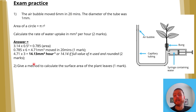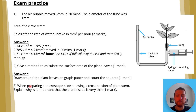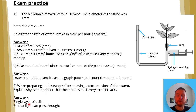Question two: give a method to calculate the surface area of plant leaves. The answer: draw around the plant leaves on graph paper and count the squares. Question three: when preparing a microscope slide showing a cross section of plant stem, explain why it is important that the plant tissue is very thin. The answer: a single layer of cells — or alternatively, so that light will pass through.